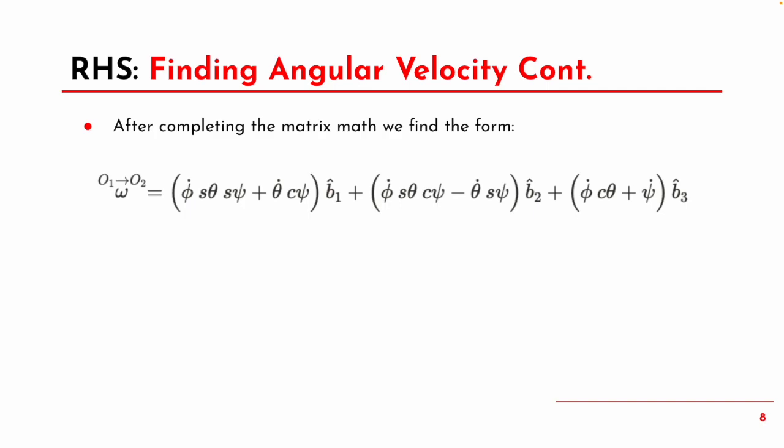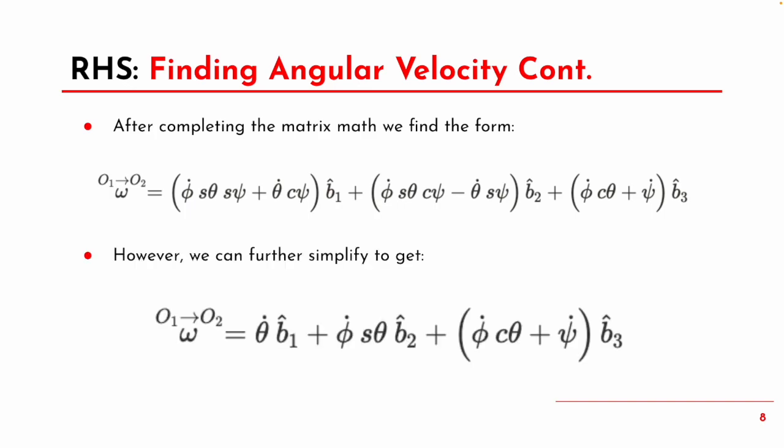One simplification we can make is setting psi equal to zero, since we only really care about the angular velocity and angular acceleration of psi, which is the rotation around the B3 axis. We can further simplify to get the following form for our angular velocity in the body frame.